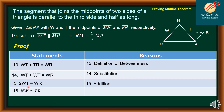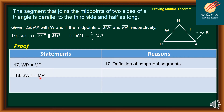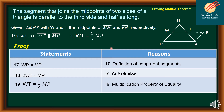Statement 16: WR is congruent to MP — in a parallelogram, any two opposite sides are congruent. Statement 17: WR is congruent to MP — definition of congruent segments. Statement 18: 2WT is equal to MP — substitution. Statement 19: dividing both sides by 2, WT is equal to one-half MP — multiplication property of equality. This completes what we wanted to prove.